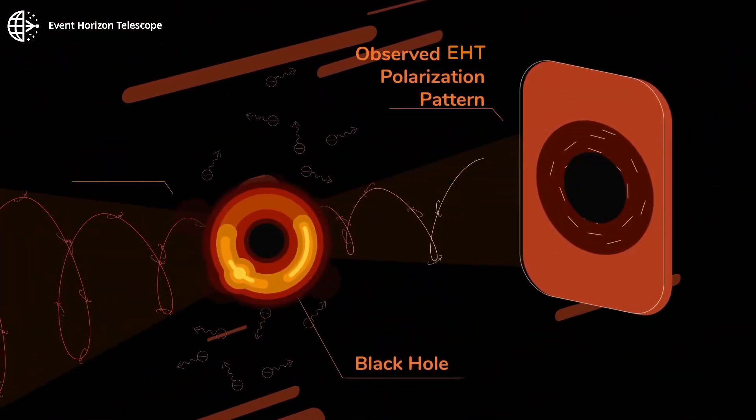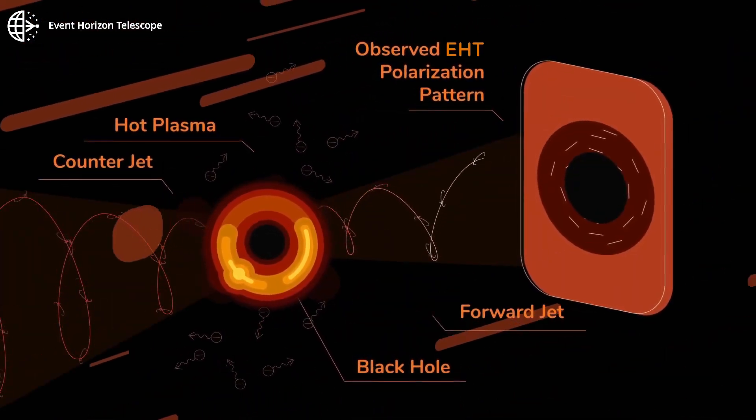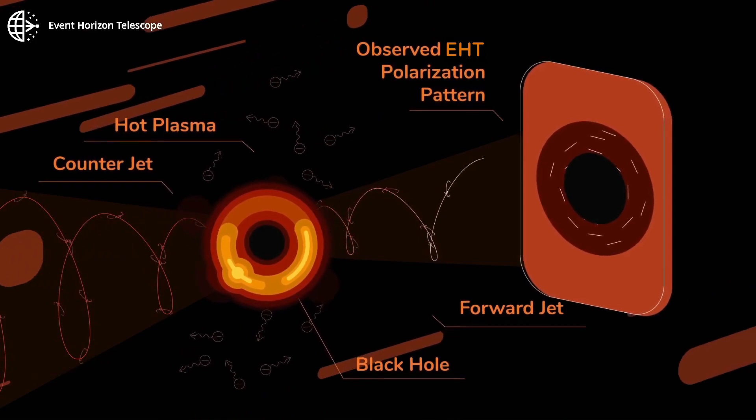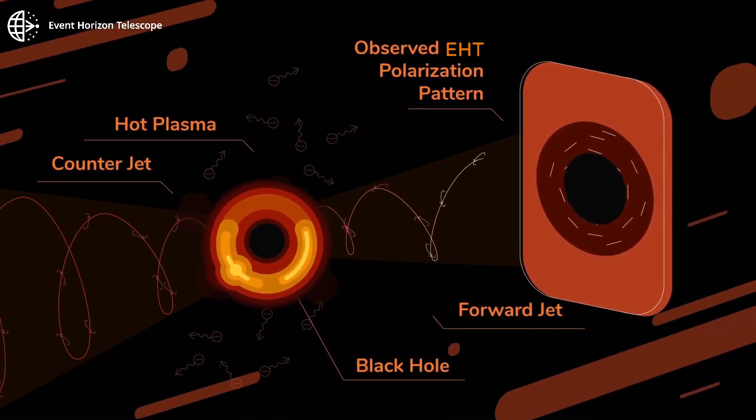The strong gravity near a black hole bends the magnetic field and twists the polarization direction of the light from the surrounding plasma.